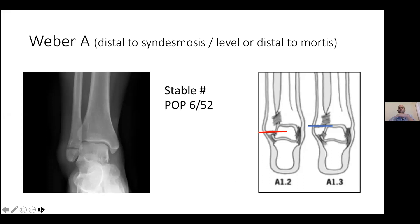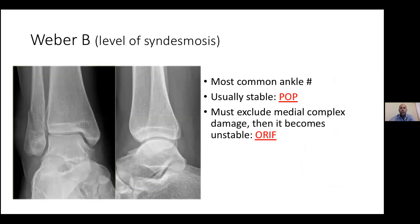The Weber A fracture is below the distal edge of the mortise — if you look at the joint line horizontally, Weber A is below that. Weber B is at and above the level where the fibula and tibia touch, and it's usually an oblique fracture.